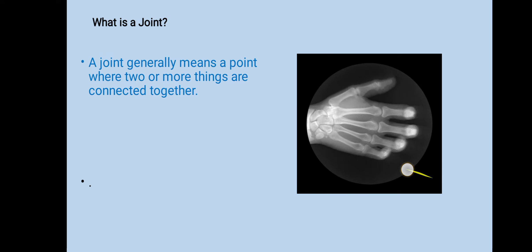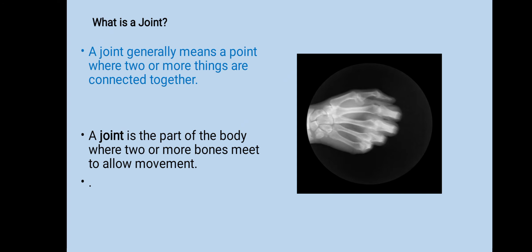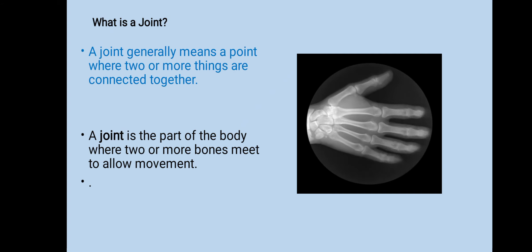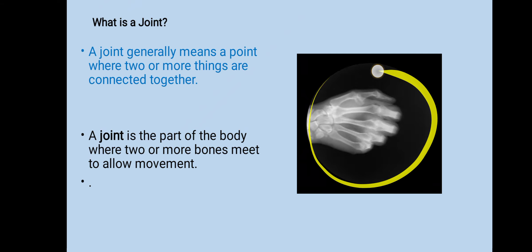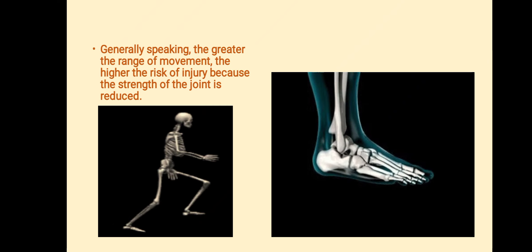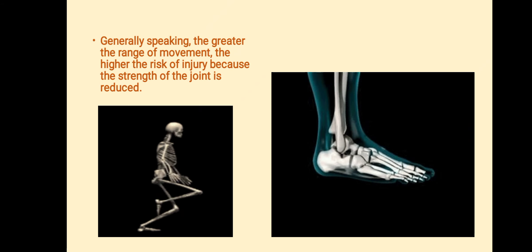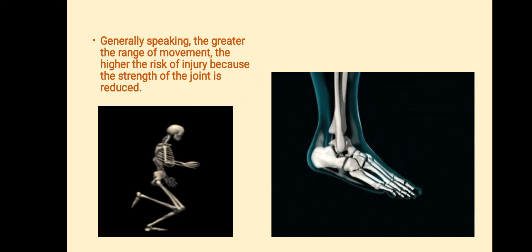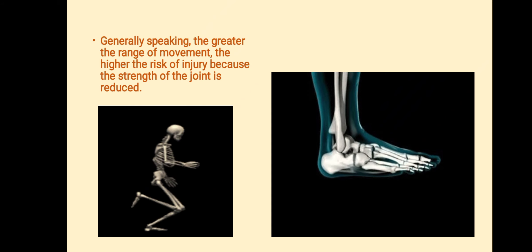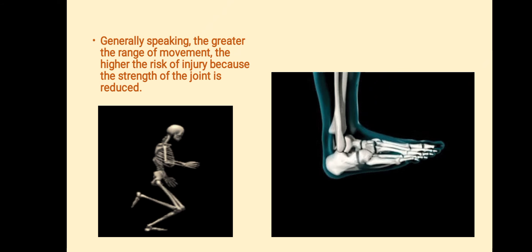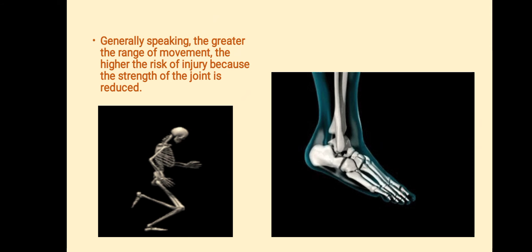In today's lesson, we have come to know that a joint is a part of the body where two or more bones meet to allow movement. We also learned that the more stable the joint, the less the risk of injury.